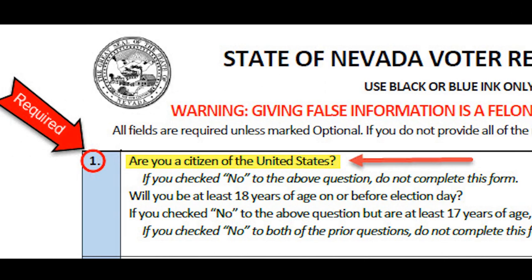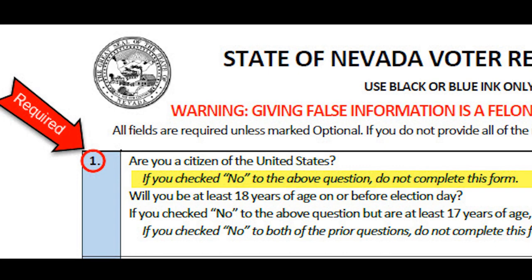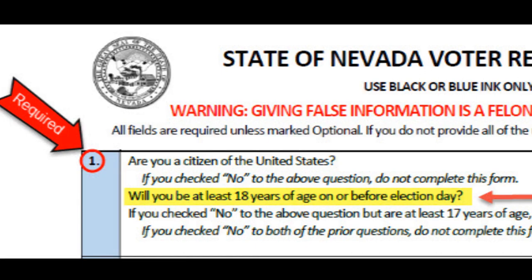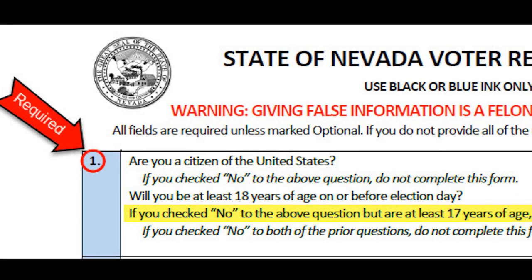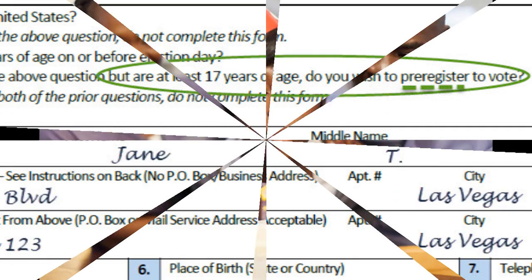Applicants are required to fill out Box 1. If the applicant is not a U.S. citizen, he or she is not qualified to register to vote. The applicant must also be 18 years of age or older on or before election day. An applicant who is 17 years of age or older but less than 18 and has continuously resided in this state for 30 days or longer may pre-register to vote. If a person pre-registers, he or she shall be deemed a registered voter on their 18th birthday.